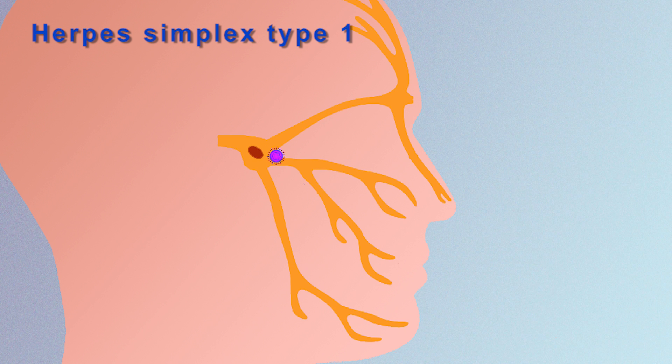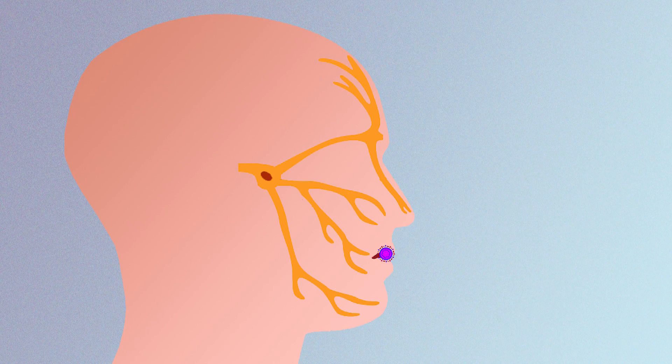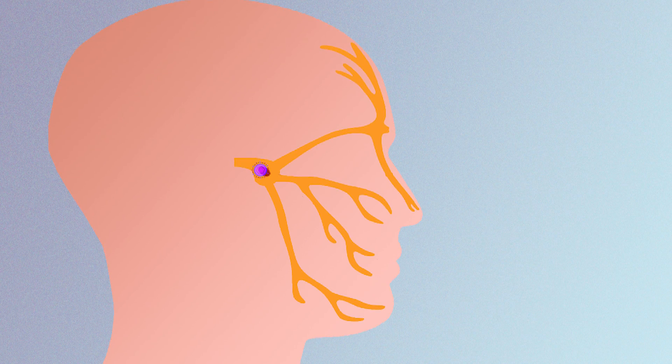In some people, however, the virus can re-evolve and reactivate from the ganglia, moving back to the lip to cause wounds again. We don't know why some of the population have this recurrent infection, whereas in 90% of us the virus is hidden in the ganglia and would never go back again to haunt us.